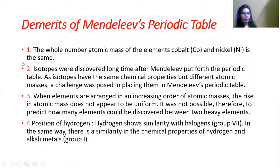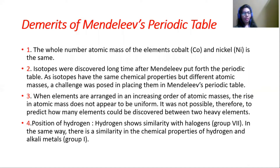The second drawback is that isotopes were discovered long after Mendeleev put forth the periodic table. Isotopes have the same chemical properties but different atomic masses, so a challenge was posed in placing them in Mendeleev's periodic table. Isotopes are elements found in nature that have the same atomic number but different atomic masses, and their chemical properties are the same.